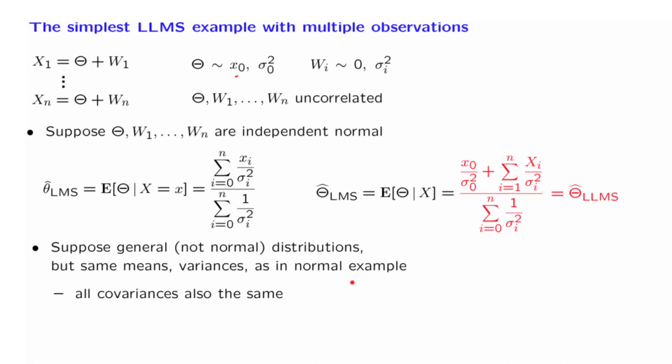Now, the optimal solution to the linear estimation problem, as we discussed earlier, only cares about the means, variances, and covariances of the random variables involved. The details of the distribution do not matter.